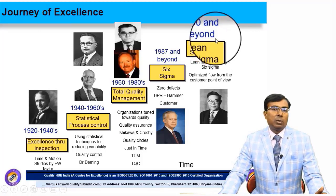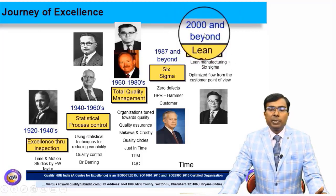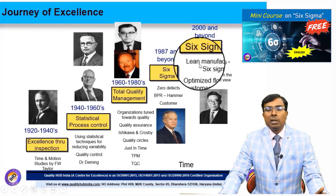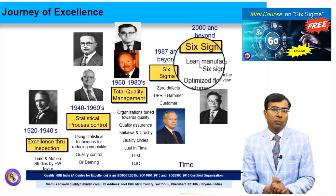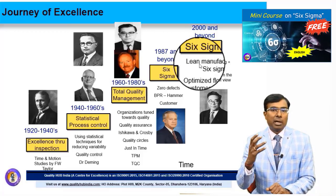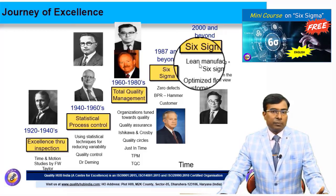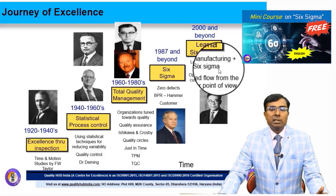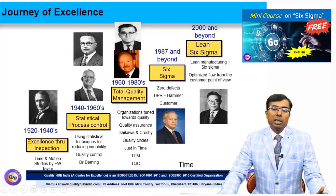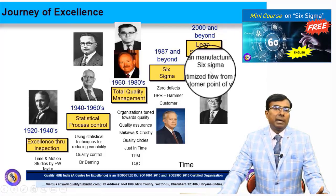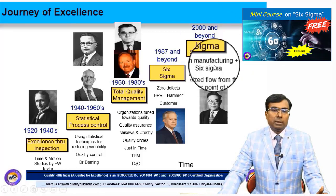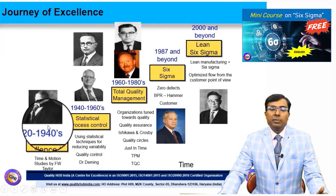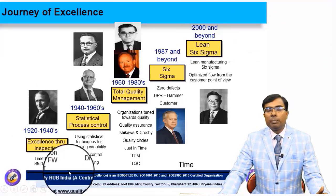Lean Six Sigma started taking root during 2000 and beyond. Lean manufacturing and Six Sigma both have unique features: lean primarily focuses on waste reduction and elimination — including Muda, Mura, and Muri (the 3Ms) — whereas Six Sigma works on the principle of variation reduction. Together, Lean Six Sigma combines both waste elimination and variation reduction, with optimized flow from the customer's point of view also being a key focus of lean.